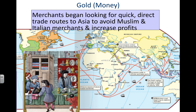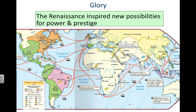Secondly, under gold, merchants were looking for quick and direct routes to Asia to avoid Muslims — that's what I was referring to when I mentioned the fall of Constantinople. Europeans set sail west because, unaware that North America and South America existed, they thought they could sail west and encounter China. They were looking to avoid contact with Muslims and get a direct route to China, and specifically the Western European empires wanted to bypass the Italians so they could get the profits for themselves.